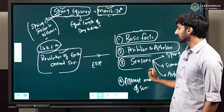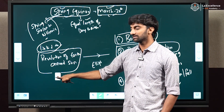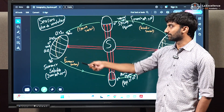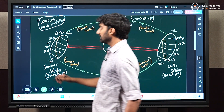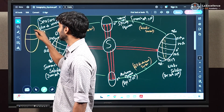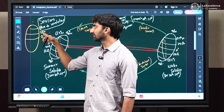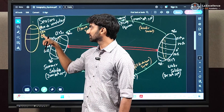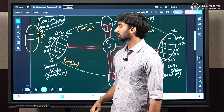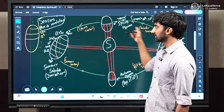Now we are discussing the important seasons which are formed because of revolution of earth around sun. Earth revolves around the sun in an elliptical orbit. There are very important latitudes around earth: 0 degrees, 23.5 degrees, 66.5 degrees, and 90 degrees north, and same in the southern hemisphere. We call them respectively the equator, Tropic of Cancer, Arctic Circle, North Pole, Tropic of Capricorn, Antarctic Circle, and South Pole. These important latitudes play a very critical role in the revolution of earth around sun.